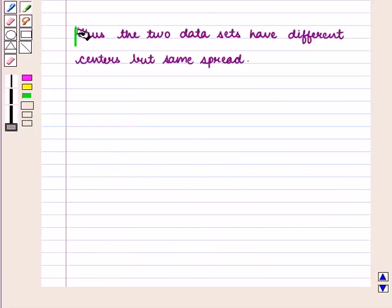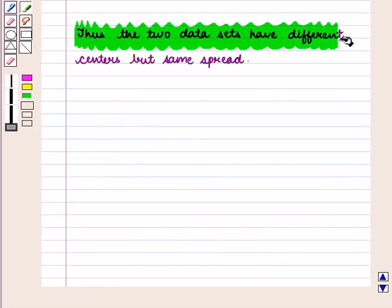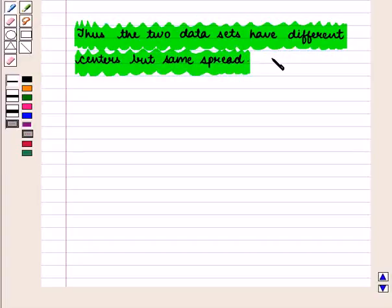Thus we can say that the two data sets have different centers but the same spread, which is the required answer. This completes our session. Hope you enjoyed this session. Thank you.